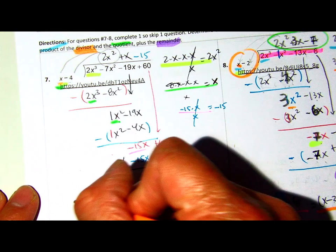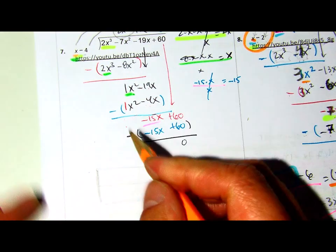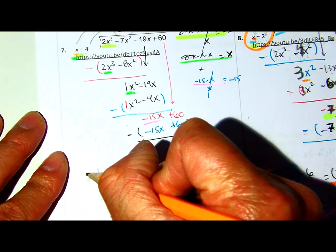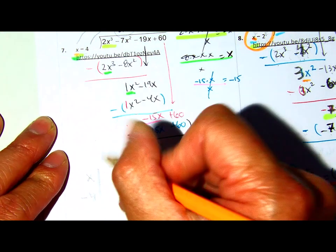So, x, sorry. Right here, can you see it? x minus 4. And the inside, the dividend, has to start with 2x to the third.